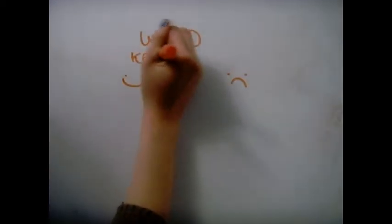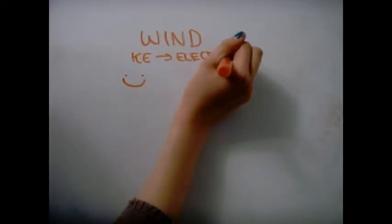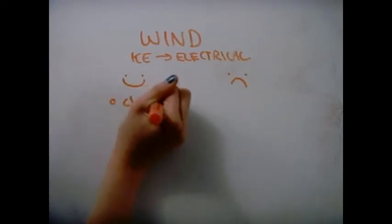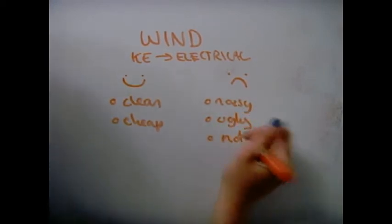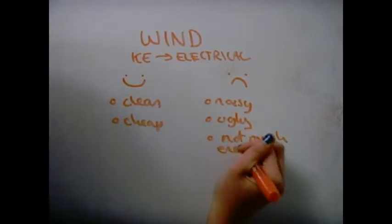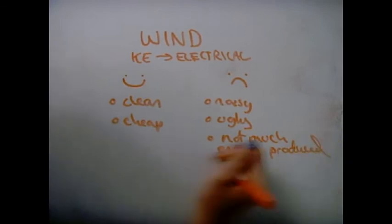These next sources of power are renewable sources. Wind power. It is a clean and cheap source of power. However, it is noisy, an eyesore, doesn't produce much energy, and it's not very reliable.